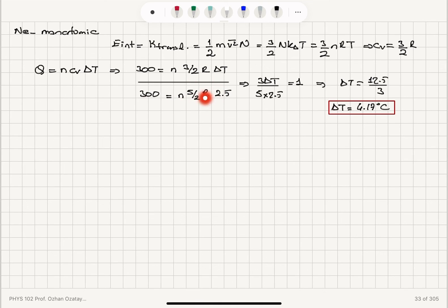300 is n times 5/2 R, 2.5 for hydrogen. With the same number of moles, you can see that 300s will cancel, ns will cancel, 1/2 Rs will cancel. So we will be left with 3 delta T divided by 5 times 2.5 equals 1, that corresponds to a temperature increase of 4.17 degrees Celsius.